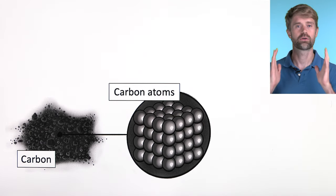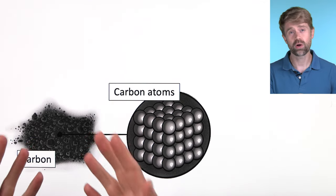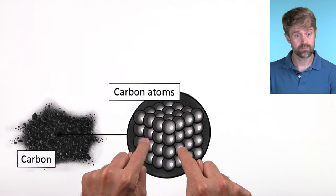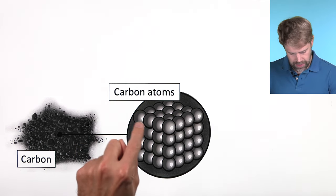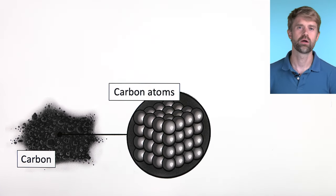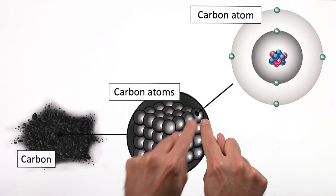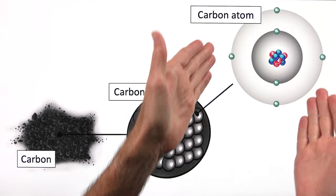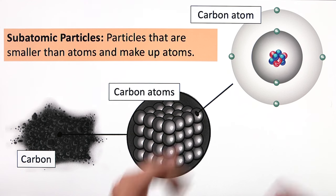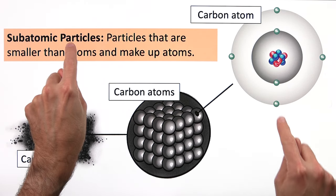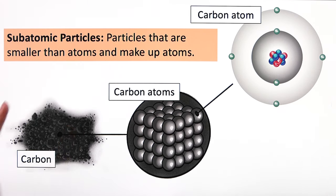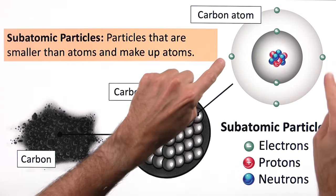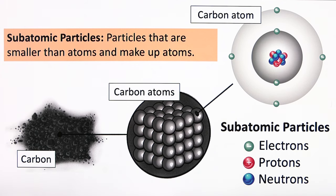Now let's look at atoms even closer. If you zoomed in on a little pile of pure carbon — basically charcoal or coal — you'd find trillions of carbon atoms. So far we've just been showing atoms as tiny colored balls, but that's a simplification. Atoms are far more complicated. If you zoomed in even deeper into one atom itself, you'd see that it has a structure. Every atom contains smaller particles that we call subatomic particles.